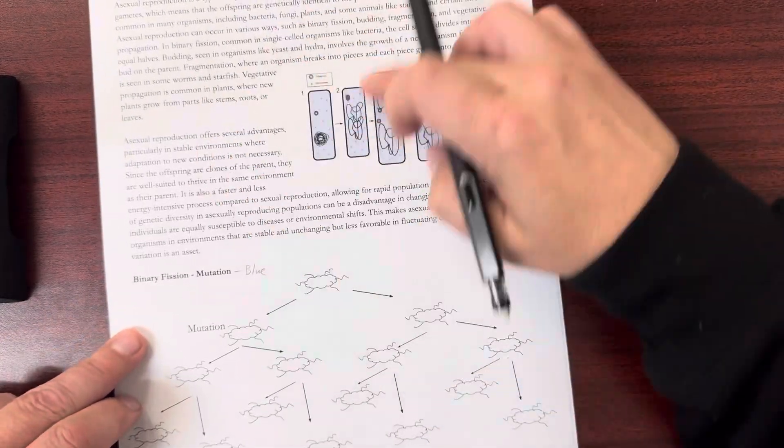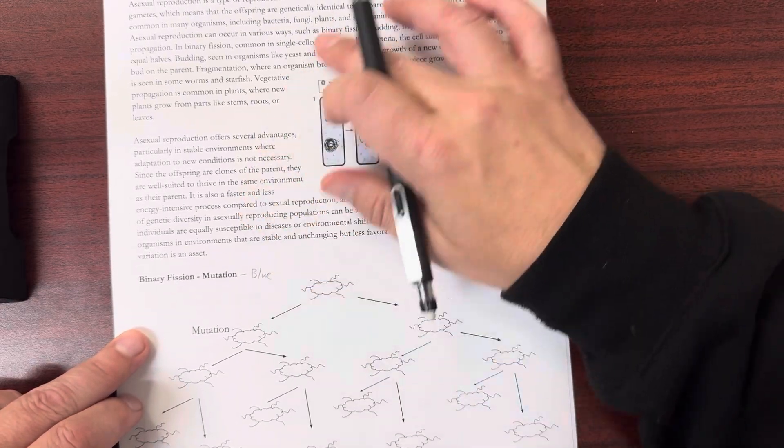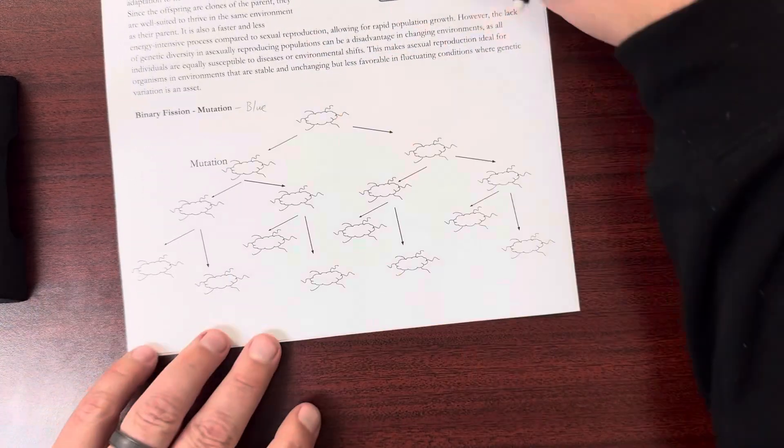And it talks about that up here, what asexual reproduction is, and what some positives and negatives are to it. But then I've got three images.